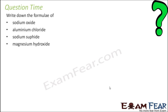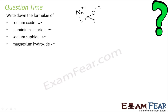Let's take more numericals to clarify our concepts. We have to write the formula of sodium oxide, aluminium chloride, sodium sulphide, and magnesium hydroxide. For sodium oxide: sodium is metal written first, oxygen is non-metal. Sodium is plus 1, oxygen is minus 2 — this becomes 2 and 1, so the formula is Na2O.